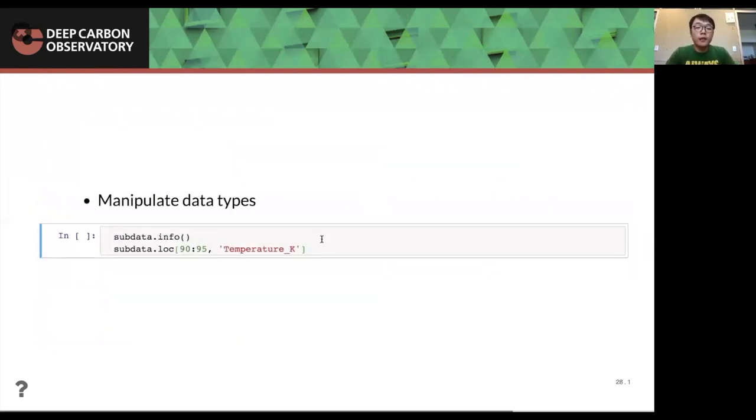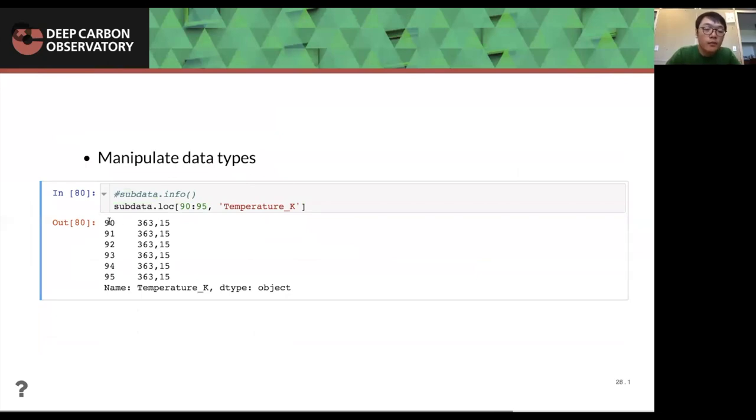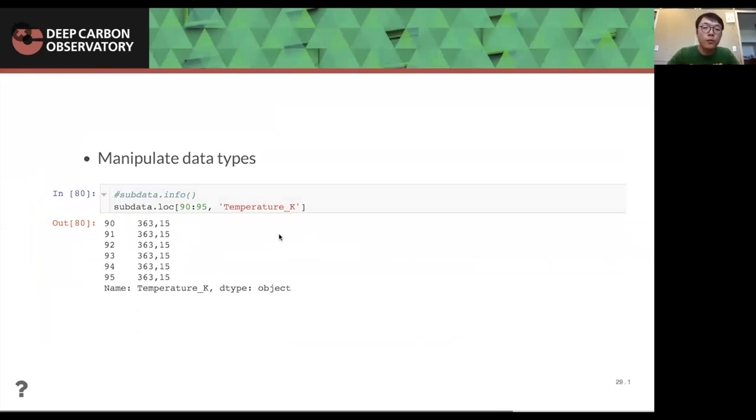Another thing is manipulate data types. As we showed, as I showed before the temperature K, there is something wrong with the temperature K. And if we print this out, you can see that from the row 90 to 95, the numbers are not right. They use comma instead of dot to show the as decimal points. So in order to deal with this, I wrote a for loop function to replace comma by dot.